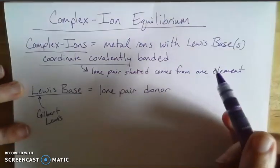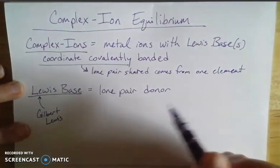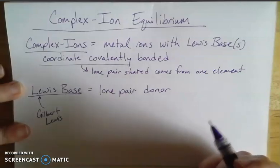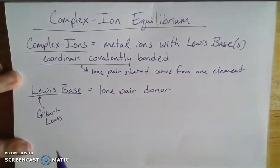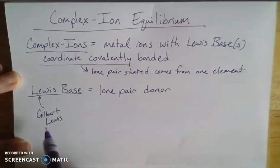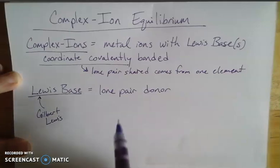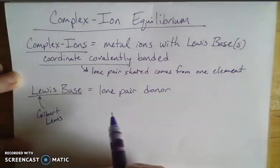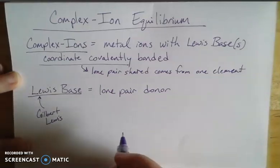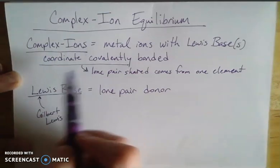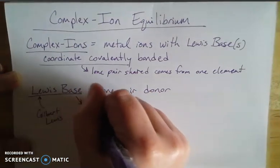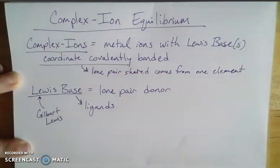Now, the Lewis base here is the one that has that lone pair to share, or that lone pair to donate. And recall that a Lewis base coming from Gilbert Lewis, who if you've ever taken classes from me in the past or seen videos about the Lewis dot structure, you know I have a very soft spot in my heart for Gilbert Lewis. He was nominated for the Nobel Prize 41 times and never got a Nobel Prize. So Lewis also had a system for categorizing acids and bases. He looked at it with respect to electron or lone pairs. And so he defined bases as lone pair donors and acids as lone pair acceptors. So in this context, when we're talking about complex ions, Lewis bases are called ligands.